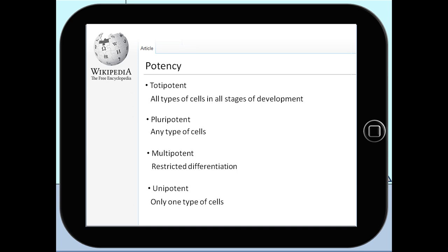Unipotent stem cells can only differentiate into their own types of cells. This means that they can only produce one type of cells.